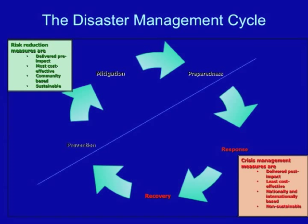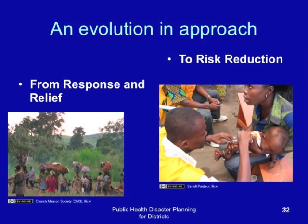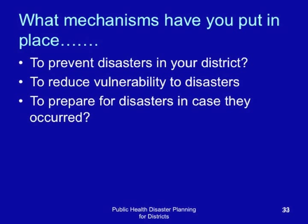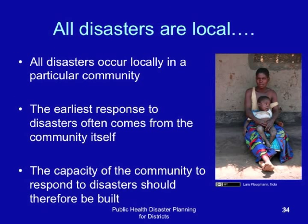There is an evolution in approach from response and relief to disaster risk reduction. A challenge to you: What mechanisms have you put in place to prevent disasters in your district, to reduce vulnerability to disasters, and to prepare for disasters in case they occurred in your district? All disasters are local — all disasters occur locally in a particular community. The earliest response to disasters often comes from the community itself, and the capacity of the community to respond to disasters should therefore be built.